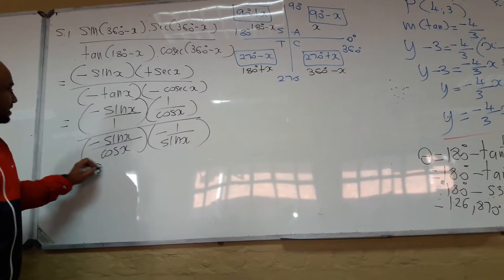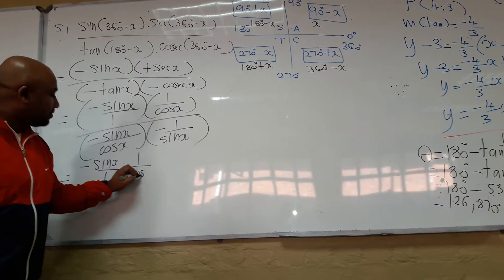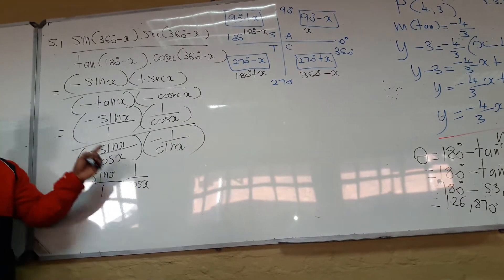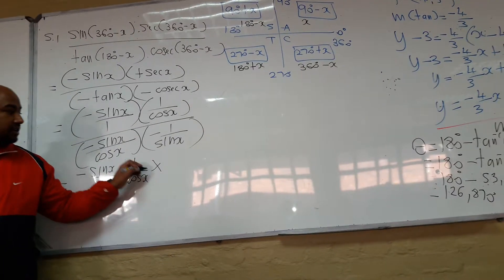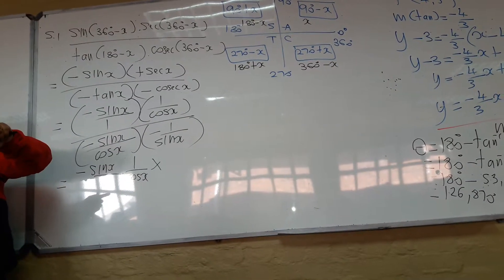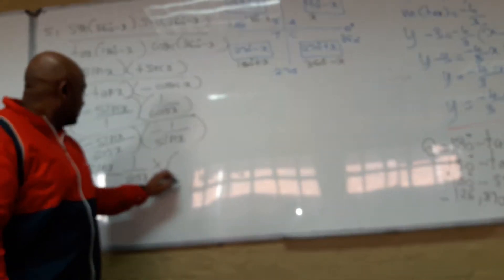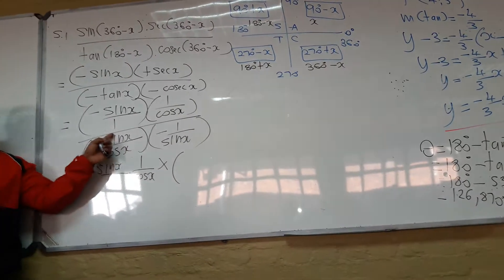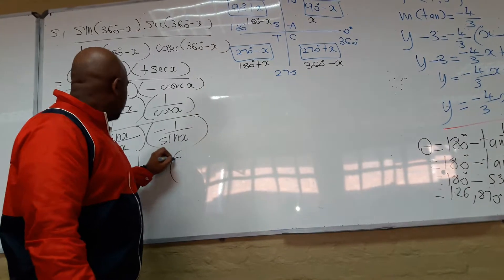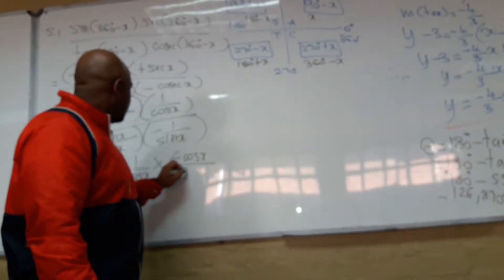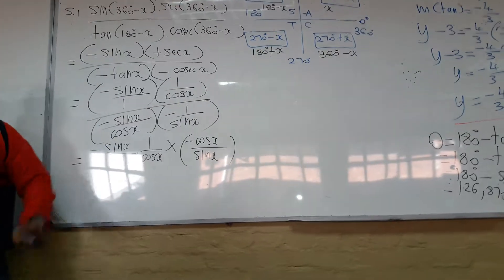So I've got minus sine x, all over 1, times 1 over cosine x. There's a division sign here. I'm going to change it to multiplication. And whatever fraction I have in the bottom, I'm going to swap the numerator and denominator for inverting. So I've got minus sine over cosine, which will become minus cosine over sine.